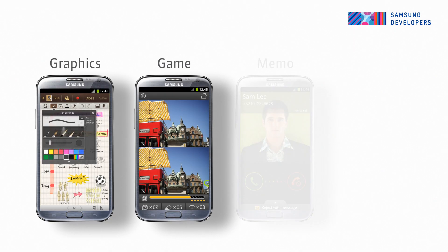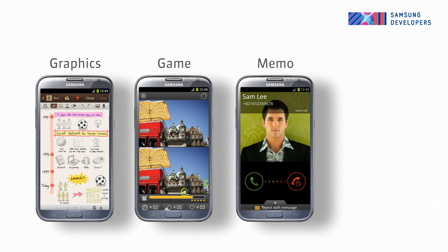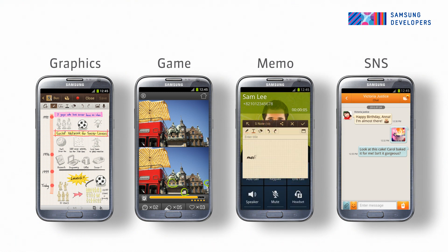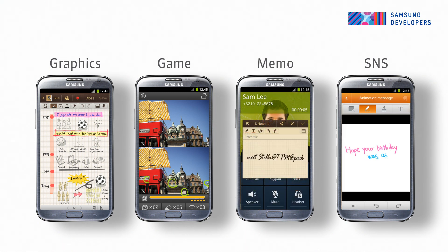The S Pen SDK contains various components that you can use to build feature-rich applications. These might include a graphics app supporting freehand drawing, a precision-controlled game, or a social networking app. S Pen can also be used in a wide range of educational and B2B environments. Features such as gestures and signature recognition open up a huge range of opportunities.